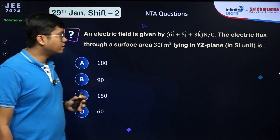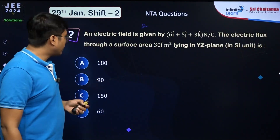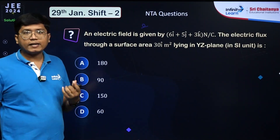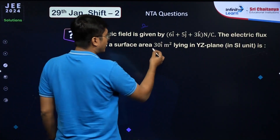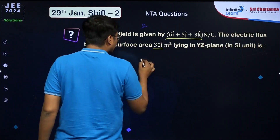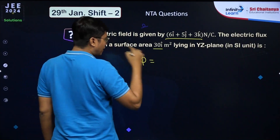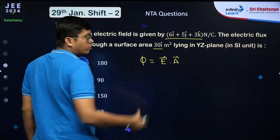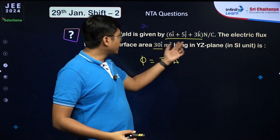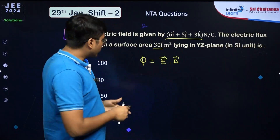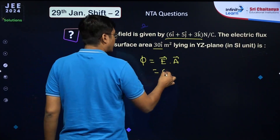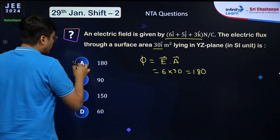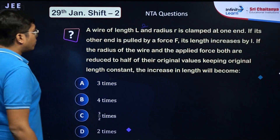An electric field E = (6î + 5ĵ + 3k̂) N/C acts on a surface of area 30î m² in the yz-plane. Electric flux = E⃗ · A⃗. Only the î components multiply: 6×30 = 180 N·m²/C. The answer is option A.